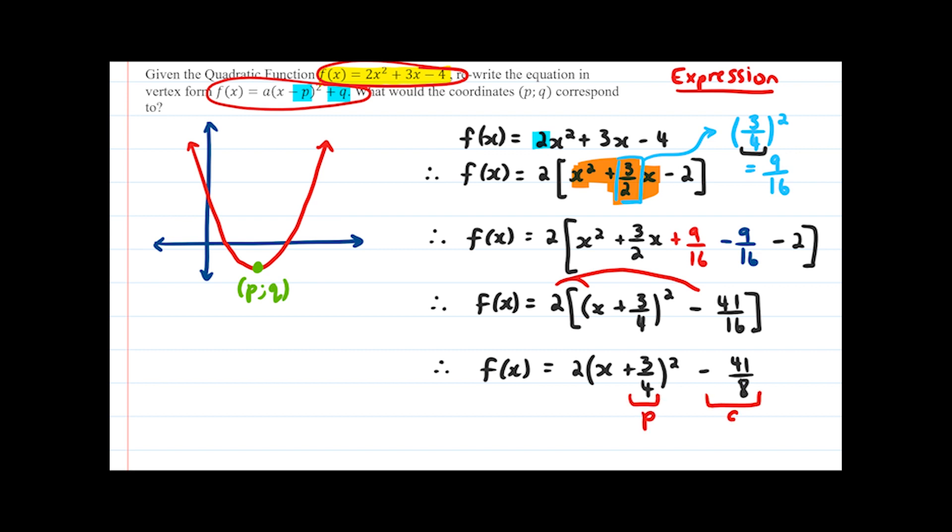Which would mean if this was a function that we were to sketch, the turning point would be at -3/4 for the x coordinate and -41/8 for the y coordinate.